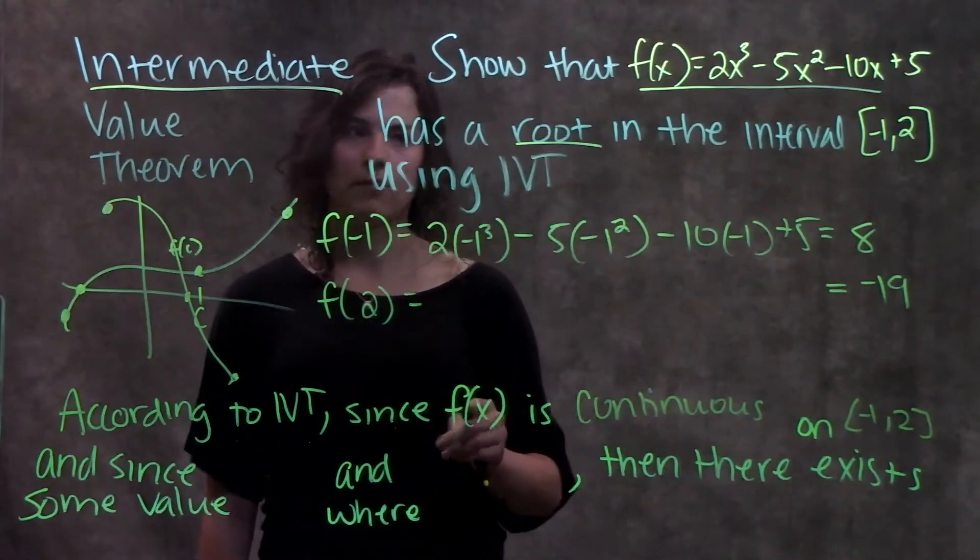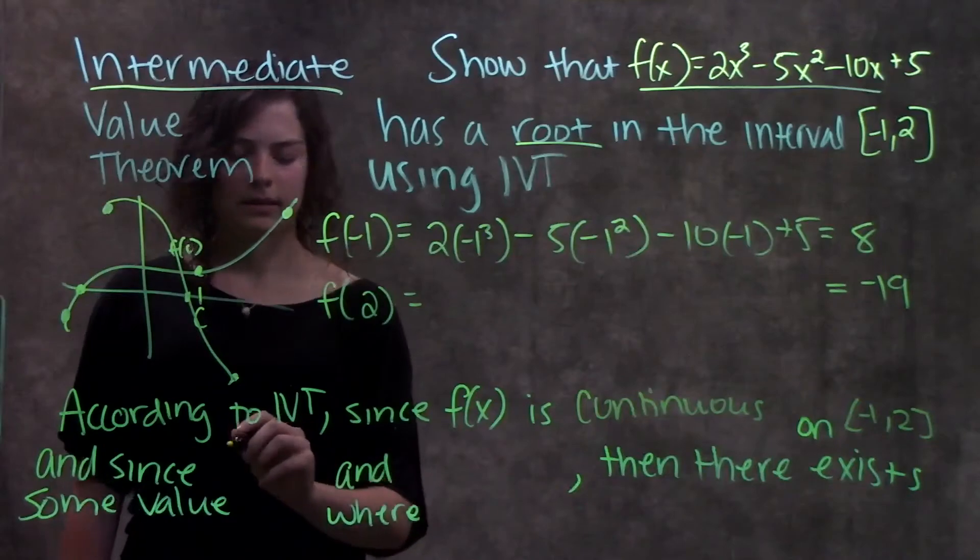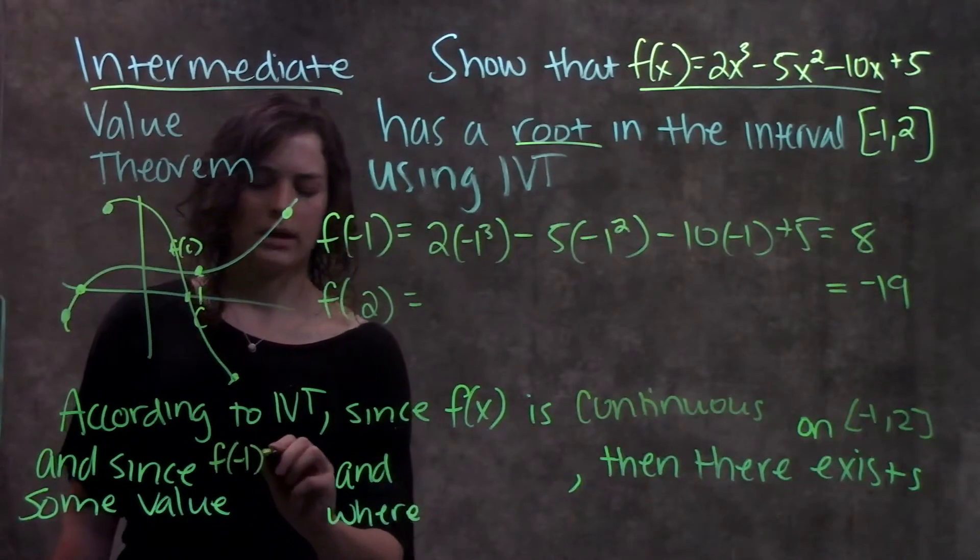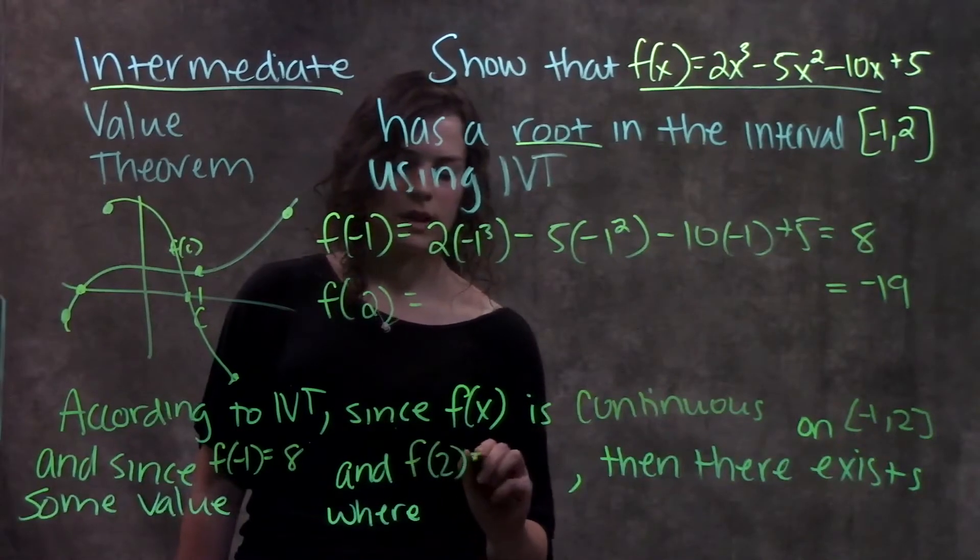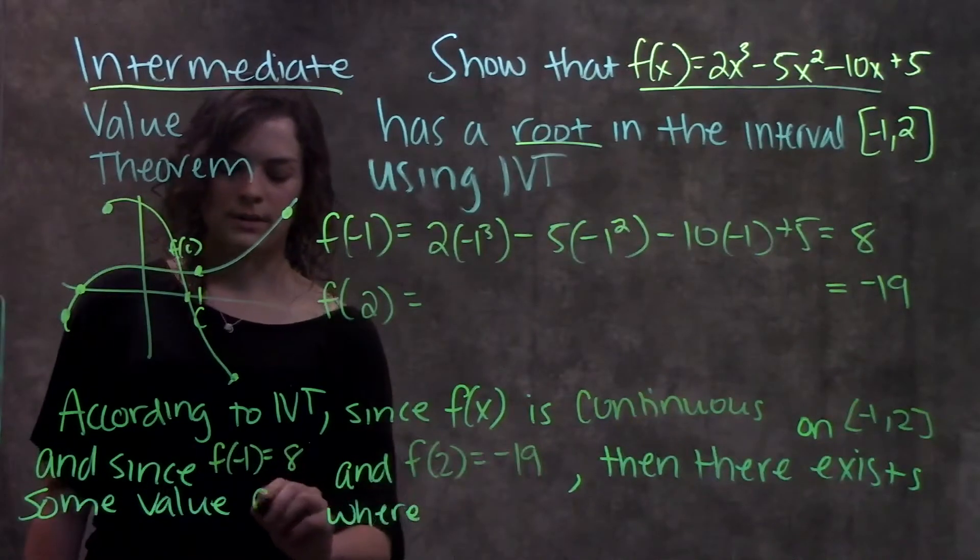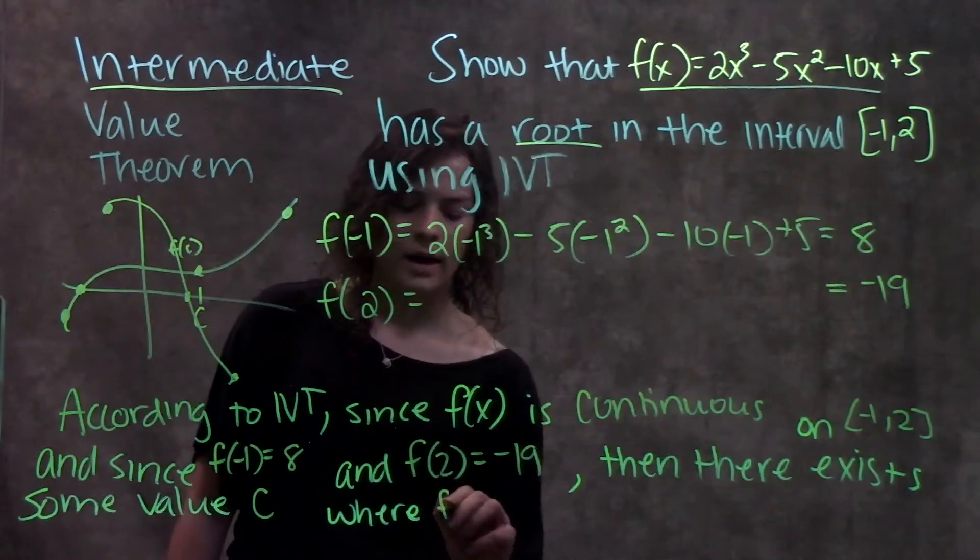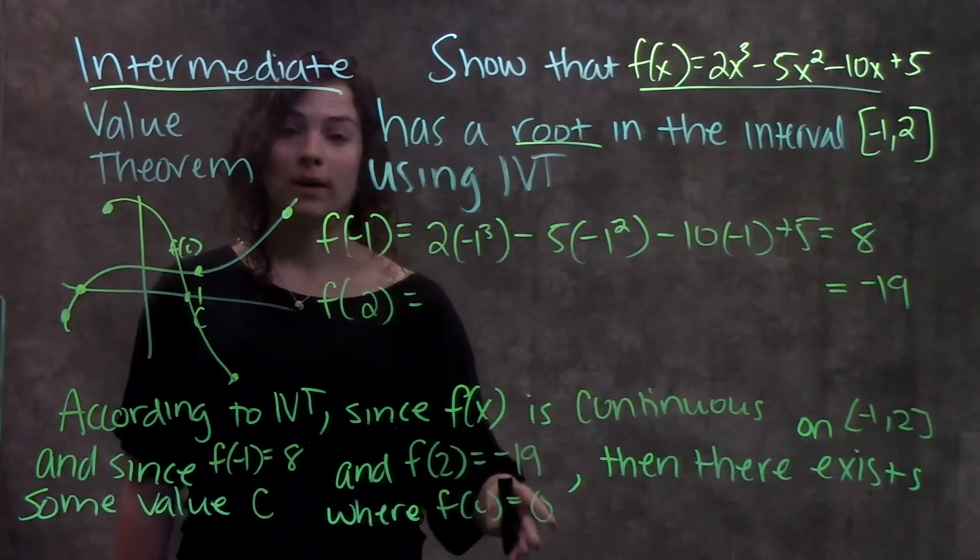Because remember that was the first point that we had to verify, this function is continuous, and since f of negative one is equal to positive eight, and f of two is equal to negative 19, then there exists some value c, where f of c is equal to zero. In other words, where there's a root.